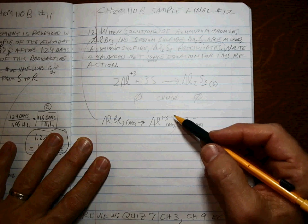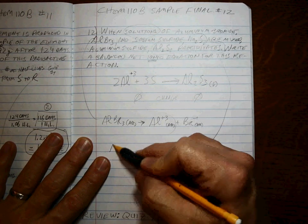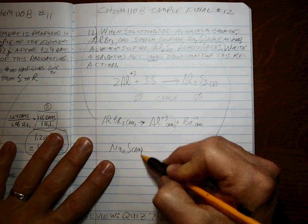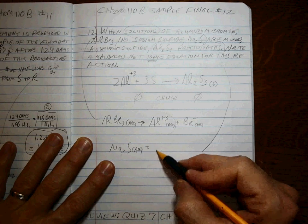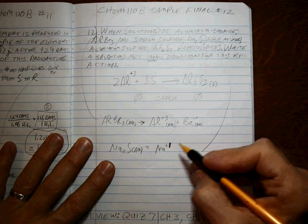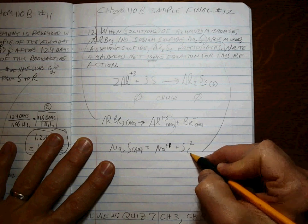So what does that have to be? Well, you can tell from this anyway. If this is a soluble solution of Na2S, you should know that that splits up into Na+ plus ones and sulfur minus twos, right?